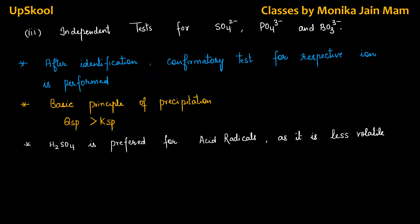If we don't identify anything in dilute and concentrated sulfuric acid, then we'll go for independent test for sulfate, phosphate, borate. These are not released in form of gases, but they have separate tests where you will get different type of precipitates. After identification, whatever you have identified, you will go for confirmatory test for respective ions. Suppose you get chloride ion, we will go for confirmatory test of chloride ion. Acetate, confirmatory test of acetate. Similarly, carbonate, then confirmatory test for carbonate. What is the basic principle of precipitation? QSP should be greater than KSP.